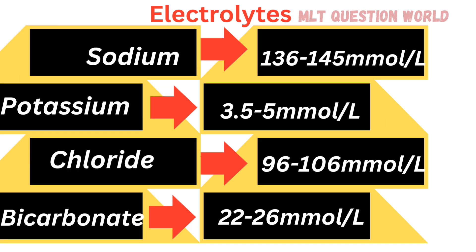Then come electrolytes. Sodium: 136 to 145 millimoles per liter. Potassium: 3.5 to 5 millimoles per liter. Chloride: 96 to 106 millimoles per liter. Bicarbonate: 22 to 26 millimoles per liter.